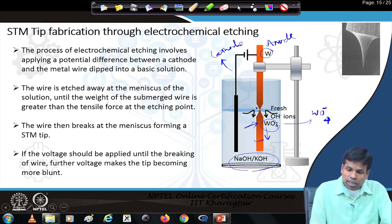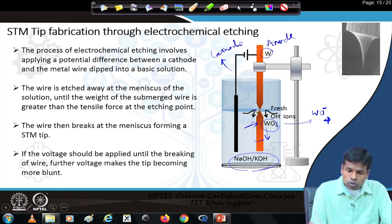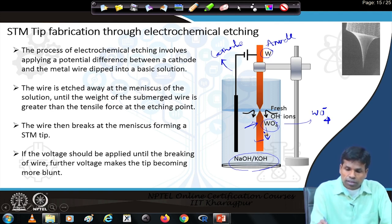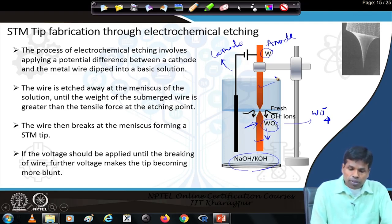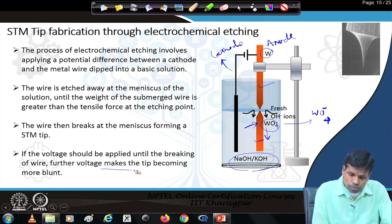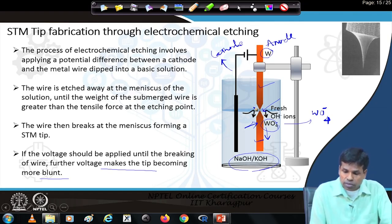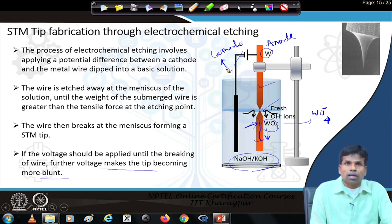As soon as the etching process is completed and the bottom part falls down, the voltage applied between cathode and anode must be stopped immediately to obtain a very sharp tip at the upper part. If voltage continues to be applied for even a few more seconds, the tip will become blunt again. So, as soon as the bottom part falls, the voltage must be stopped to preserve the sharp tip.